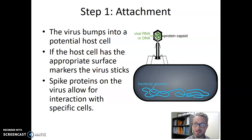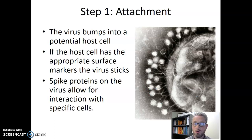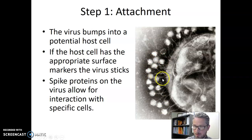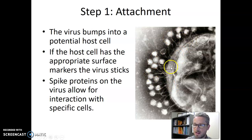Once the virus is stuck, we'll move on to step two. Here is an electron micrograph of a bacterial cell attached to many viral particles. We can see the balls are the viral particle heads, and coming off of them you can see those tail fibers sticking to the surface of the host cell. All these viruses are trying to get into this host cell — that's attachment.